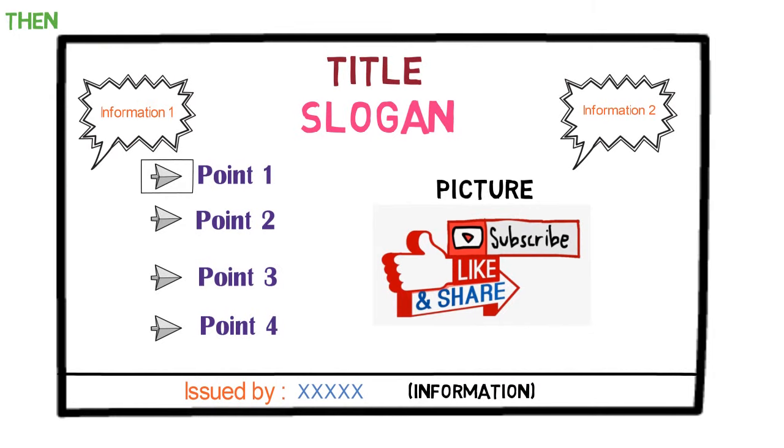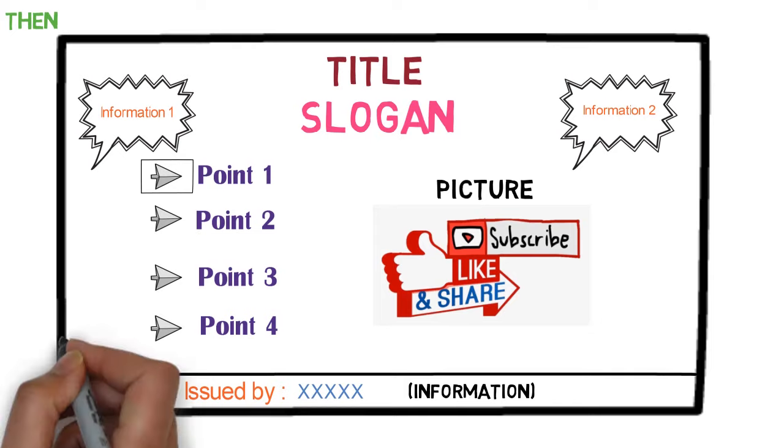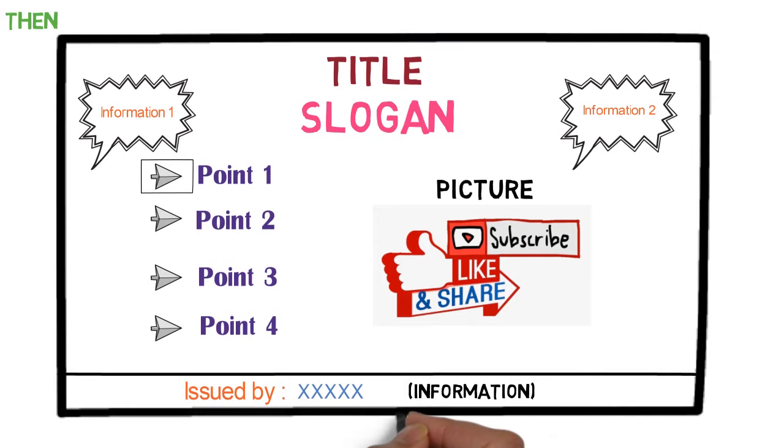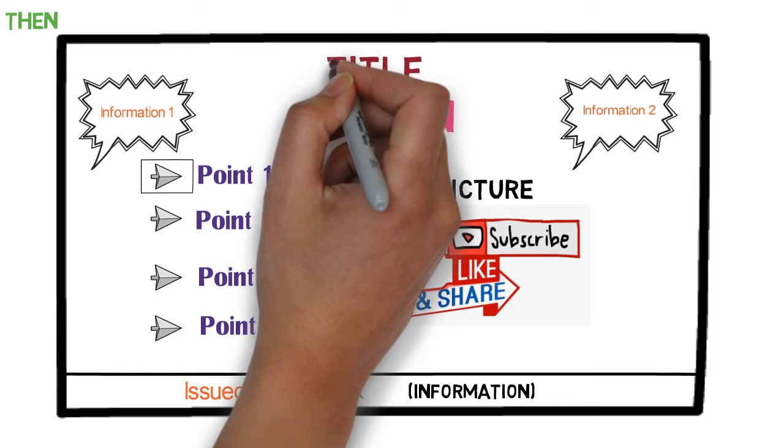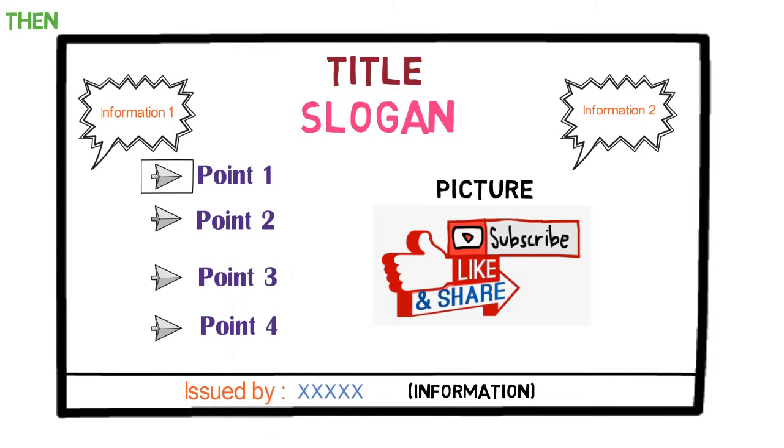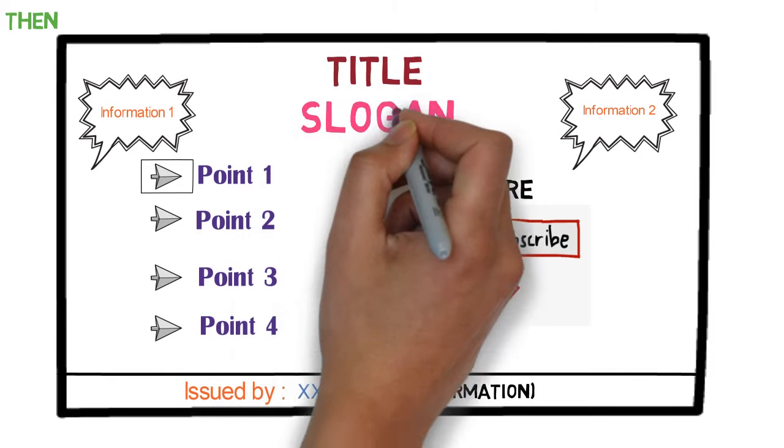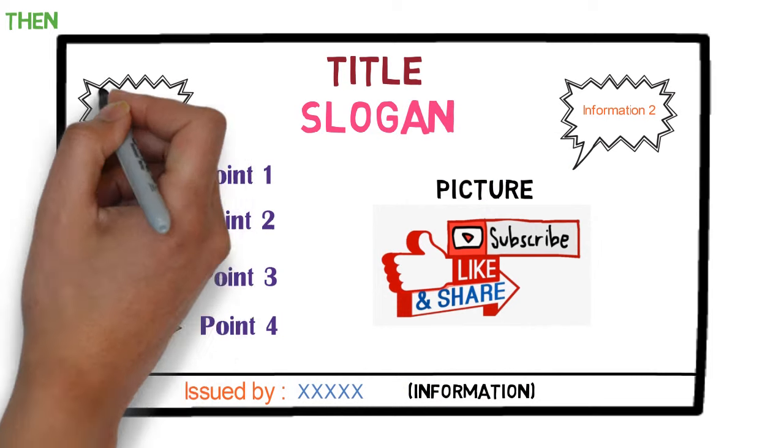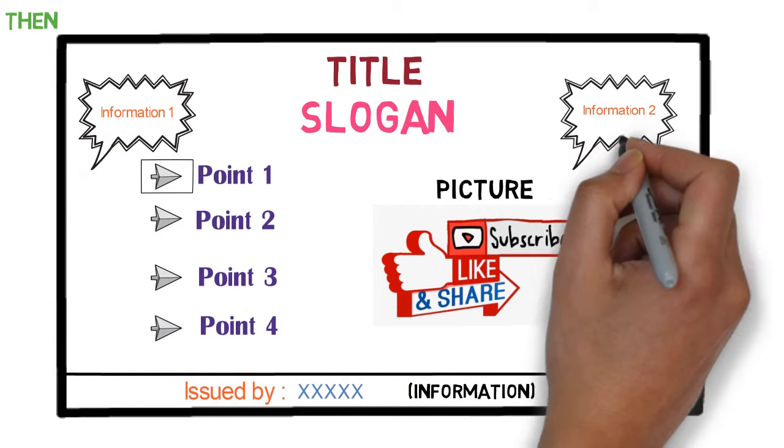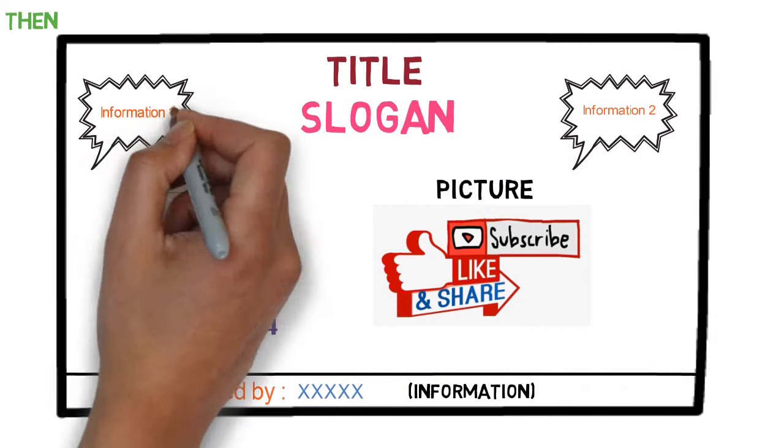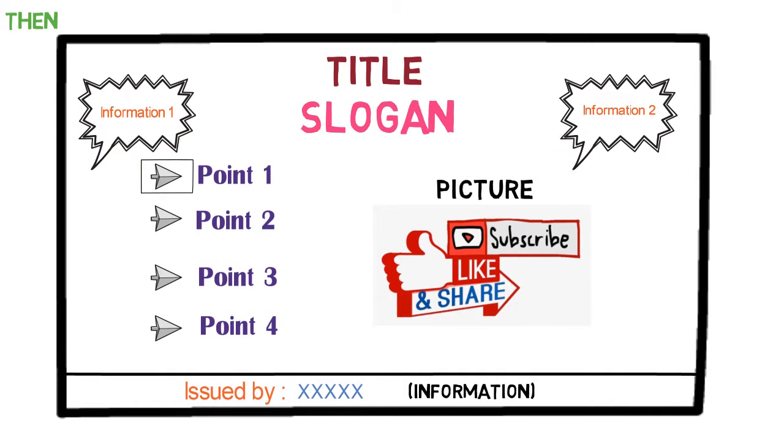Then, we learned the format of Poster Making. Let's quickly revise it. First, draw a rectangular box of the size of the poster. In the top middle, write the title or theme of the poster. Exactly below it, write the slogan or quote related to the theme. Now, at both the ends, create two bubbles and write some short piece of information or quote in them.